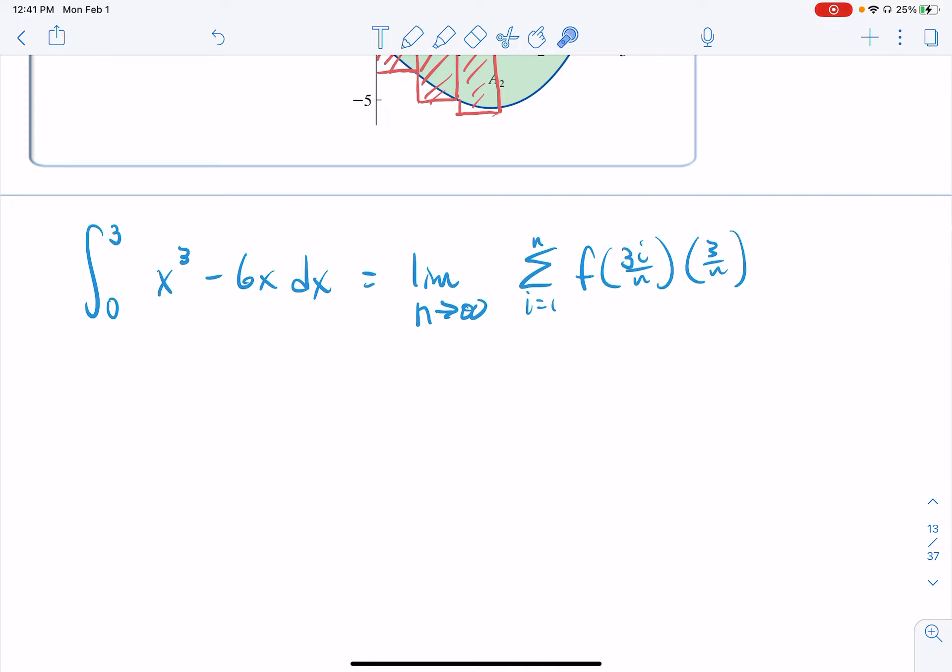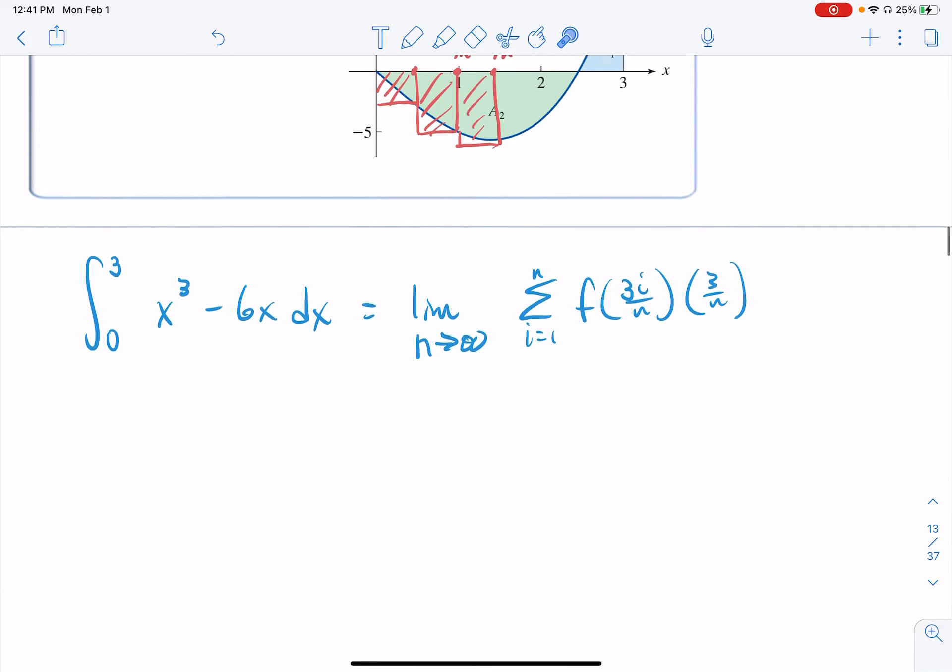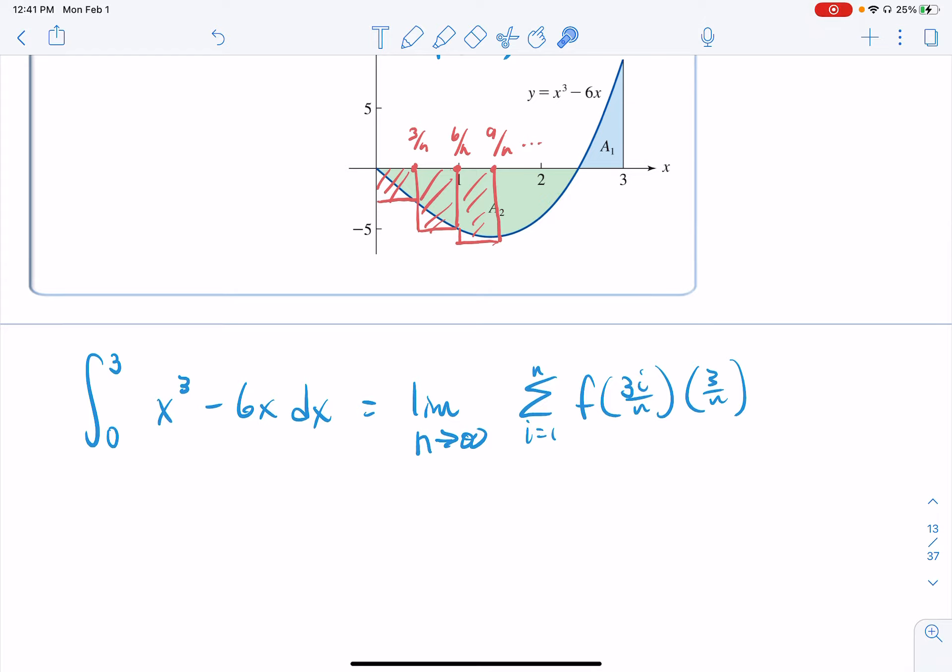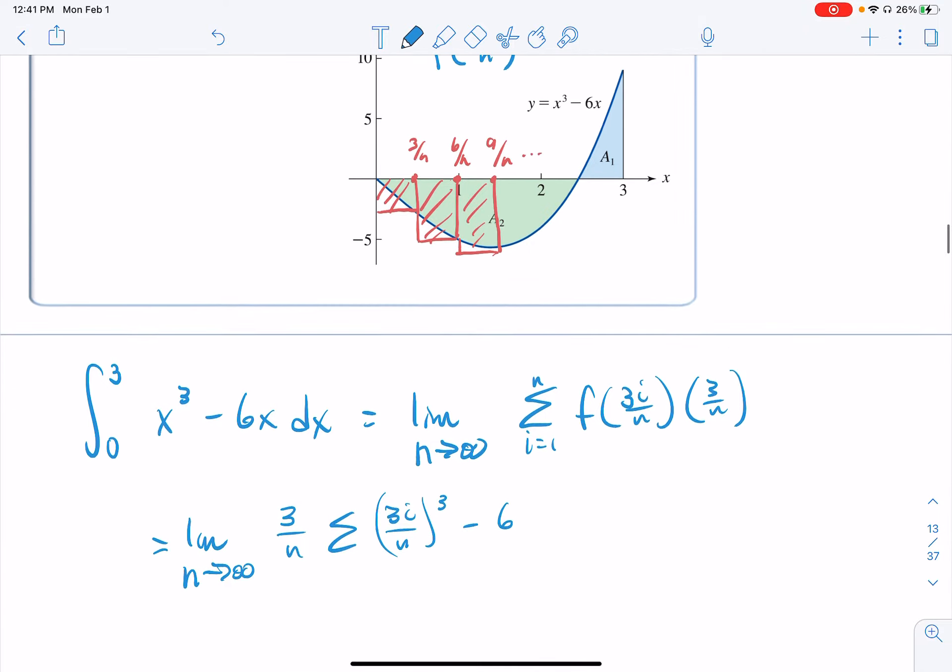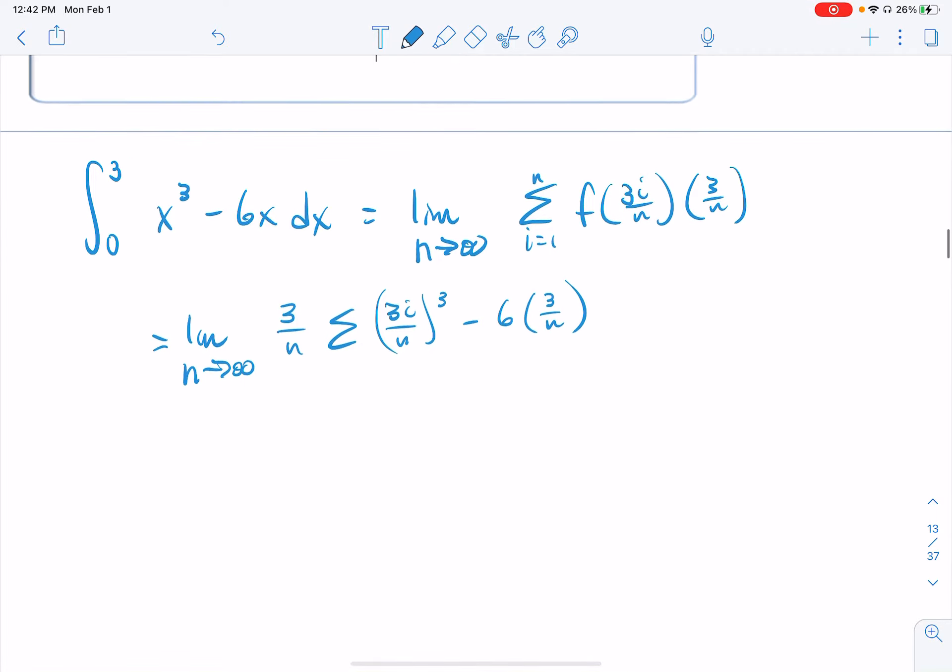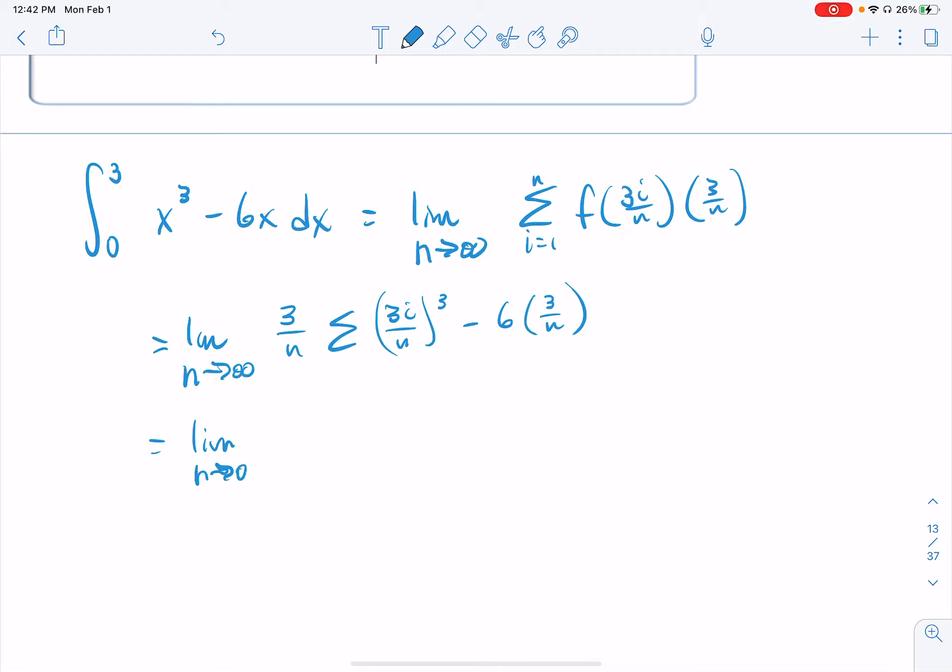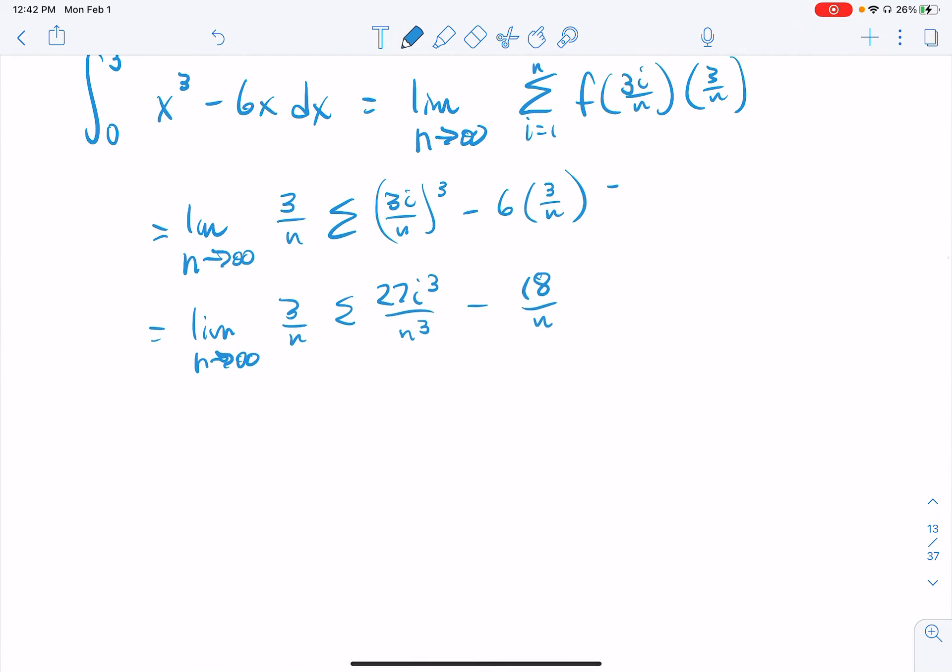Alright, so we will, as we did before, we can take the 3 over n out of the summation and evaluate this 3i over n and our function, which is that x cubed minus 6 times x. Limit, summation, and oh wait, before I do the summation, let's pull out our 3 over n as we did before. Summation, 3i over n, which we're going to cube this time, minus 6 times 3 over n. Keep going with your simplification process. 3 over n, summation, 27 i cubed over n cubed, minus 18 over n. And then we would break up each one of these little individual sums.